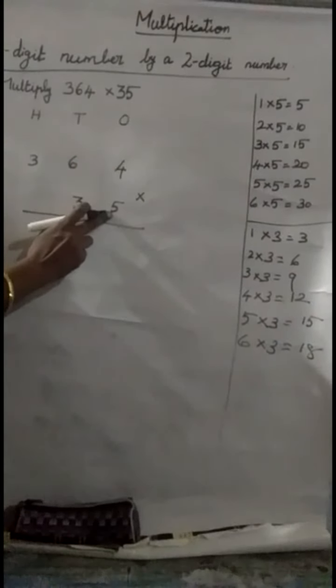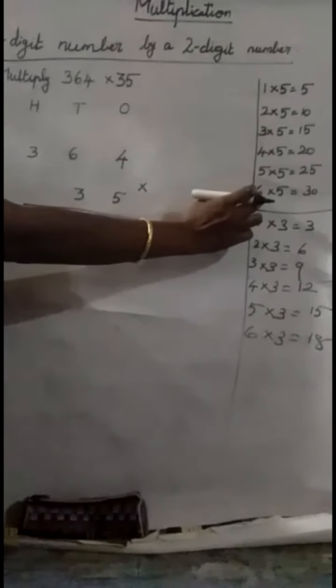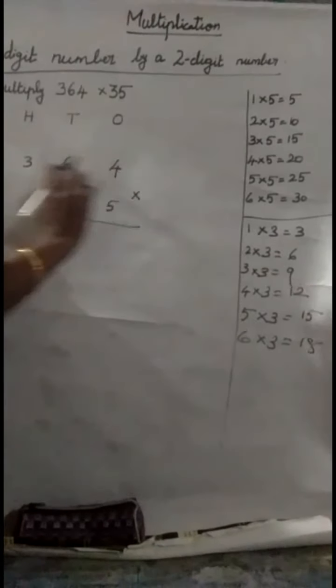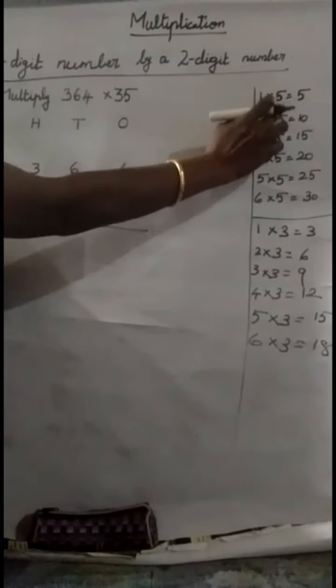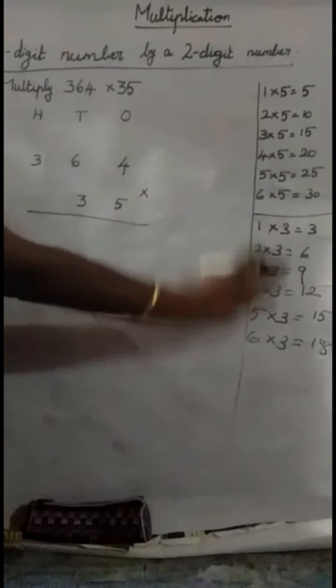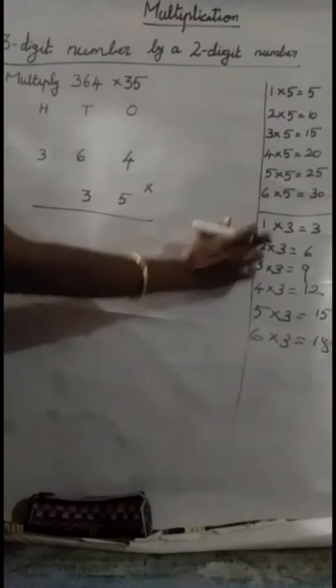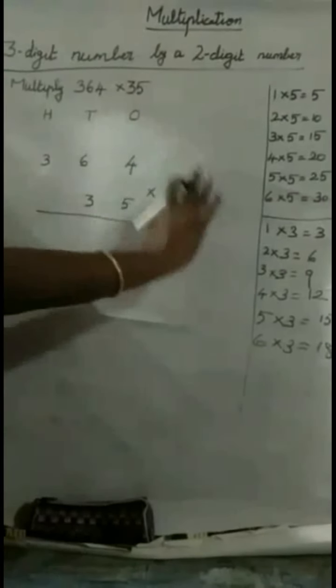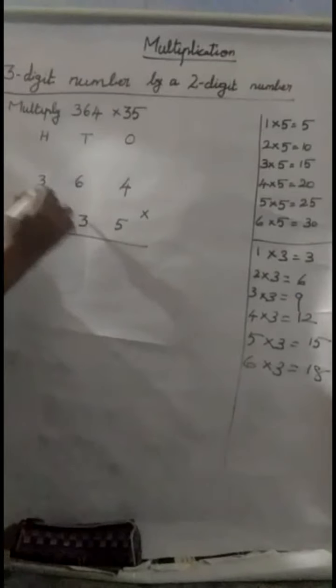What is the first multiplier here? 5. So, write the 5 table up to 6. Why we are writing the table up to 6? This is the highest number here. Which is the highest number? 6. So, write the 5 table up to 6. Same thing. Write the 3 table up to 6. But, must write the table for each and every sum. You should write the tables in the rough call.